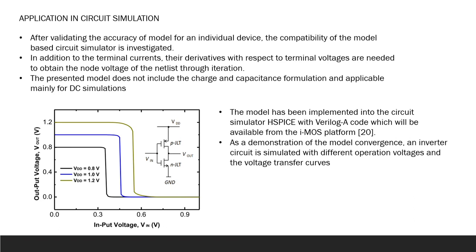This figure shows the transconductance gm versus the gate voltage characteristic with different oxide thickness. This figure shows the output conductance gds versus the drain-to-source voltage characteristic with different gate-to-source voltages. Even though we did not explicitly consider the derivatives during the model formulation, the physics-based approach to derive the current equation has ensured the continuity and smoothness of the derivatives with reasonable accuracy. The model has been implemented into the circuit simulator. As a demonstration of the model convergence, an inverter circuit is simulated with different operation voltages and the voltage transfer curves are shown. Further benchmark circuit tests show the developed model can be used for circuit simulation without convergence issues.